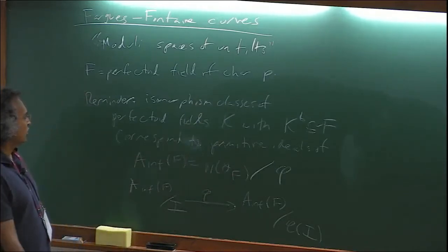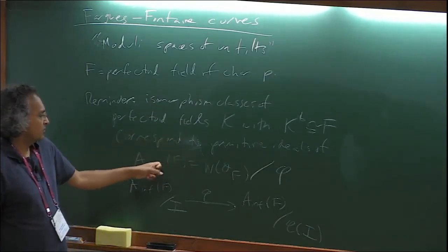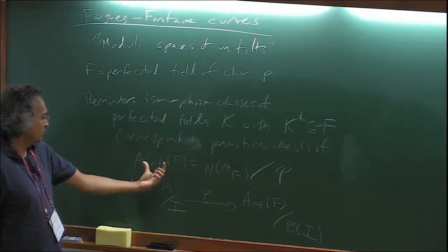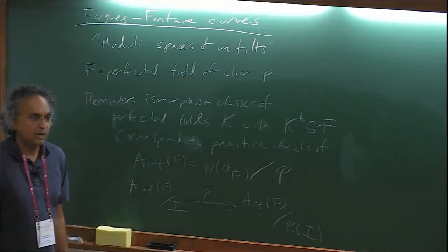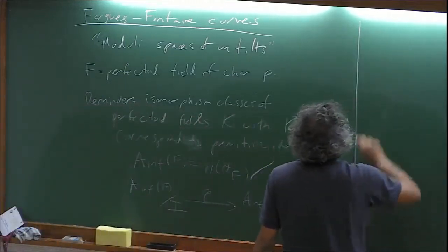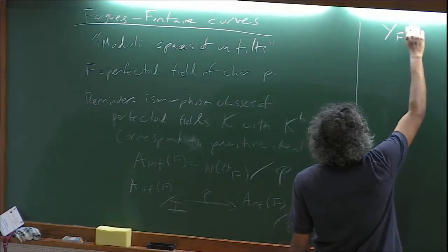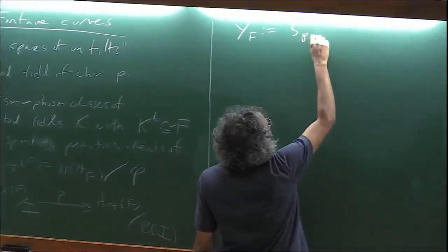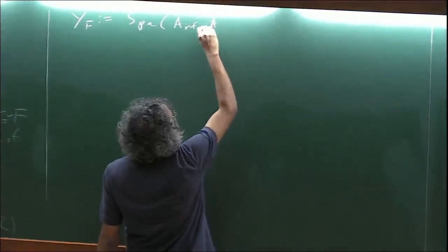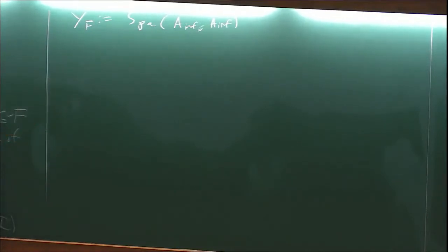The construction of the Fargues-Fontaine curve starts with the point of view that untilting corresponds to looking at primitive ideals, which give rise to points in some space associated to A_inf. But you should only consider those points modulo the action of Frobenius on the space. With that in mind, let me start making some spaces. I'm going to define a space called Y_F first. This is not the Fargues-Fontaine curve, but it's going to be related to it.